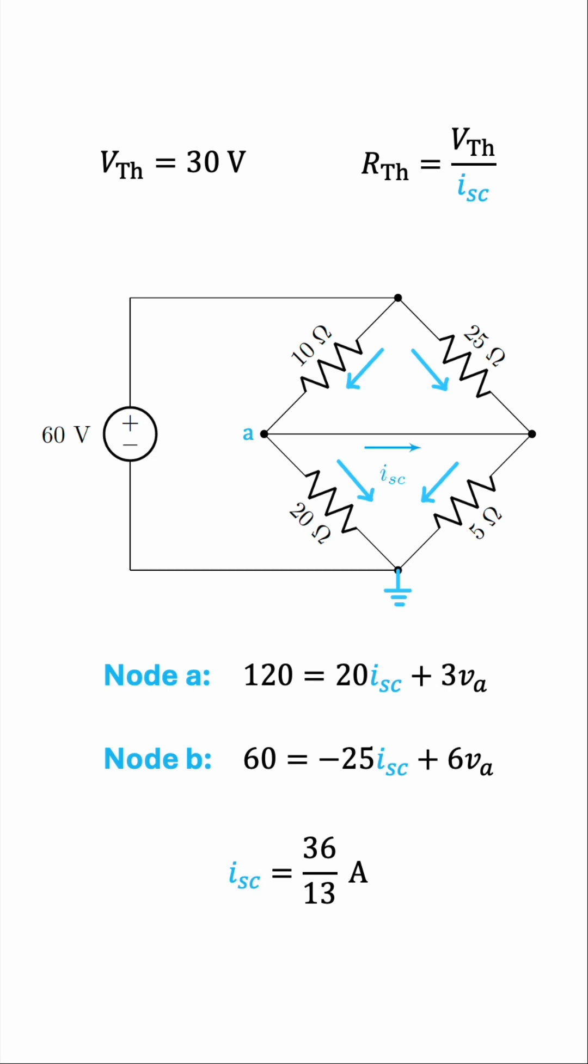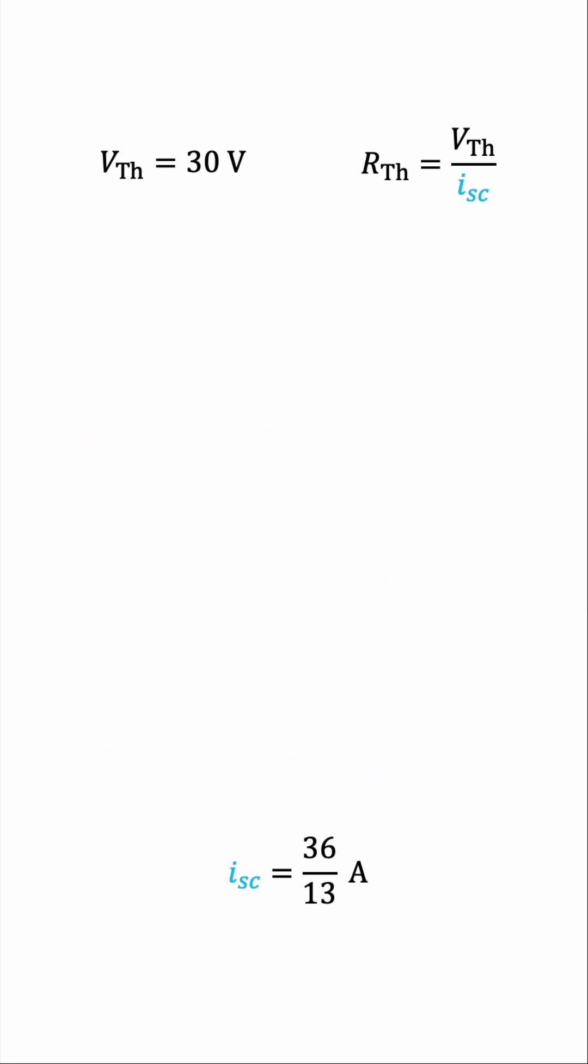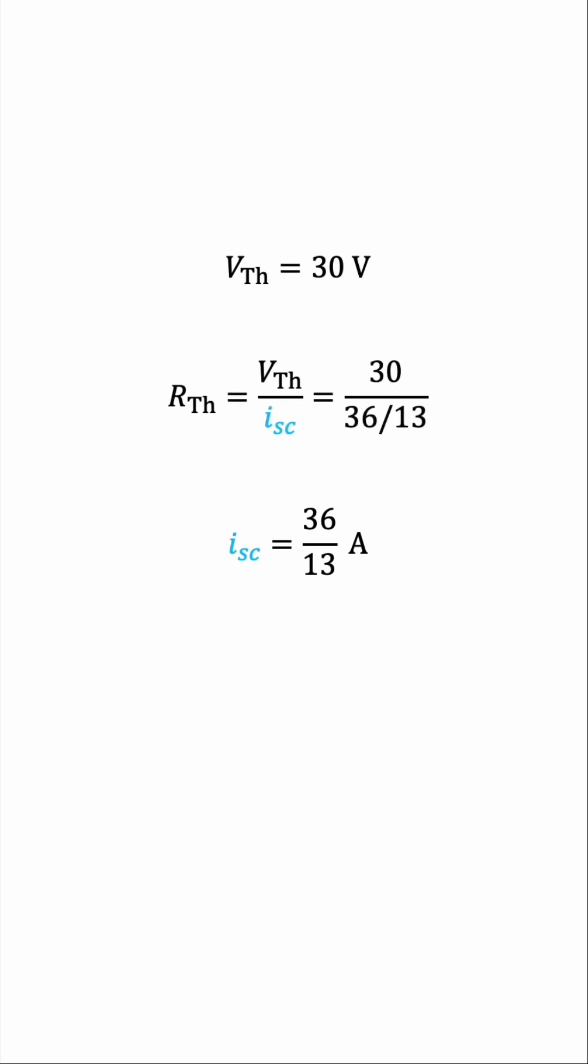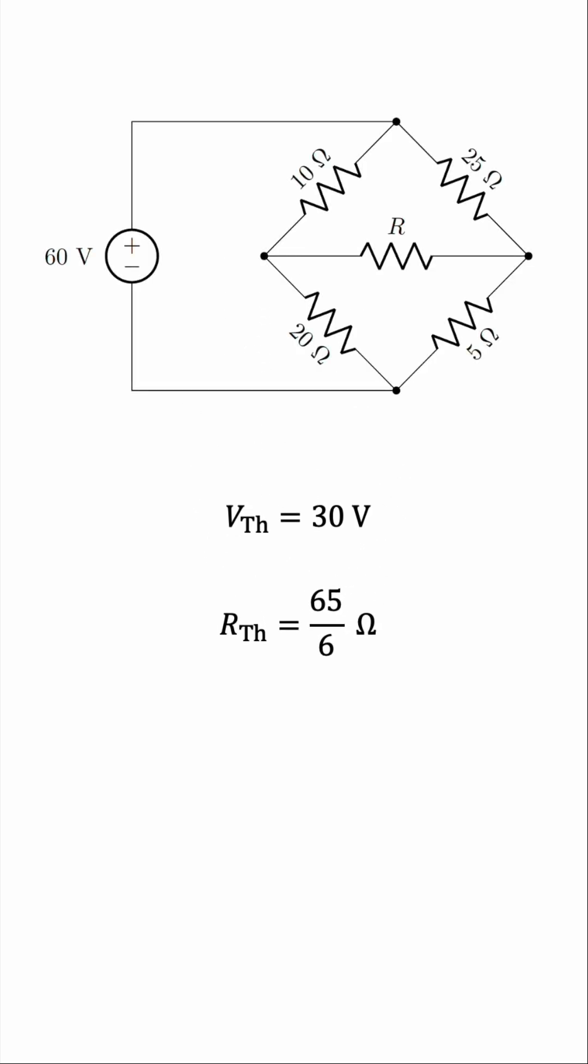And now, we can find R Thevenin by dividing 30 by 36 over 13. So this becomes 30 times 13 over 36. We can divide the top and bottom by 6, so that will be 5 times 13 over 6, which is 65 over 6 ohms. So this is the Thevenin voltage, and the Thevenin resistance of the original bridge circuit we started with, with respect to terminals A and B, which are the pair of terminals to which the resistor R is attached. Remember?